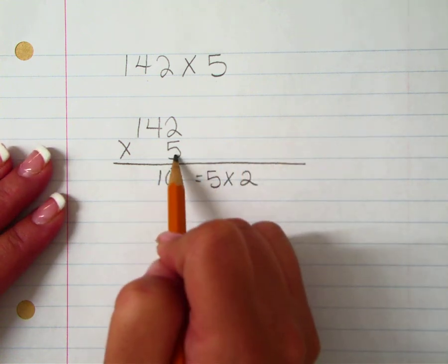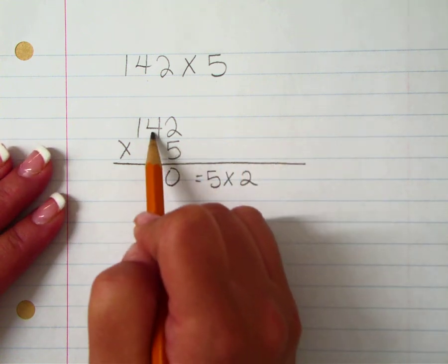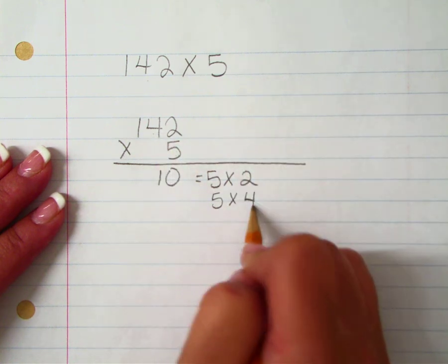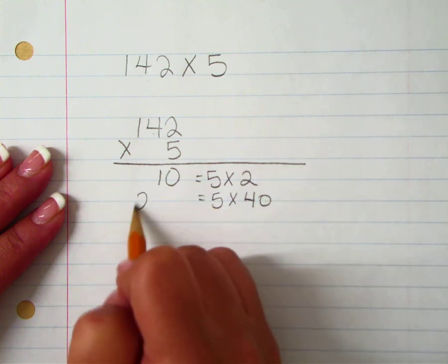And then this digit multiplied by the value of this digit, which is 5 times 40, which gives us 200.